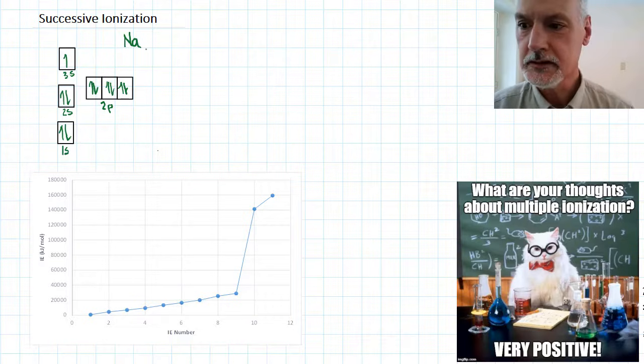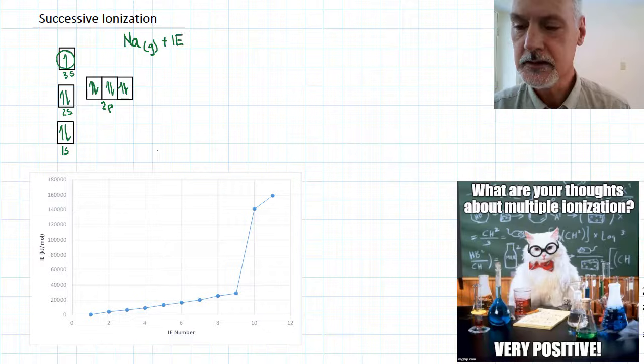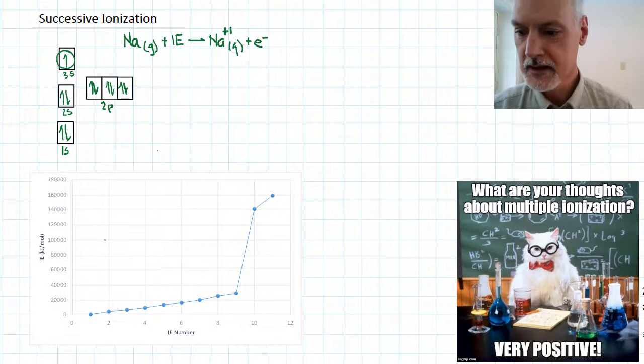So what we're going to do in the first ionization is remove this electron. We begin with sodium in the gaseous state. We would add some ionization energy to it. That would then result in the production of sodium with a plus one charge in the gaseous state, and we've liberated one electron. That energy value is plotted down here.